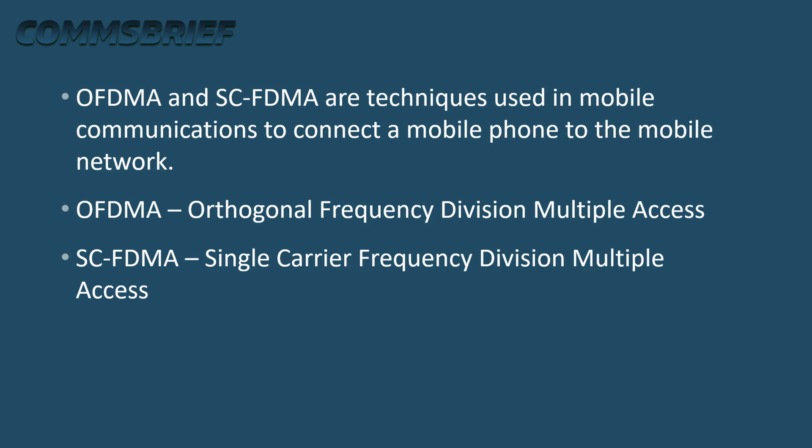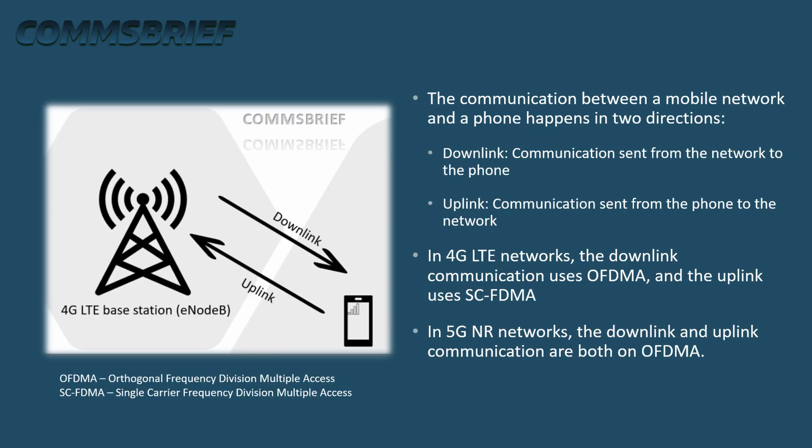OFDMA and SCFDMA are techniques used in mobile communications to connect a mobile phone to the mobile network. OFDMA stands for Orthogonal Frequency Division Multiple Access, and SCFDMA stands for Single Carrier Frequency Division Multiple Access. The best way to visualize OFDMA and SCFDMA is to look at a simplified diagram of how a cell phone connects to the mobile network.